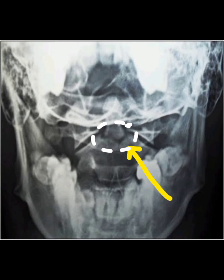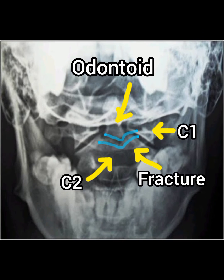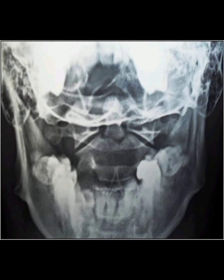This is an open mouth view showing fracture of the dens process, not extending to the C2 body. This is a Type 2 odontoid fracture.